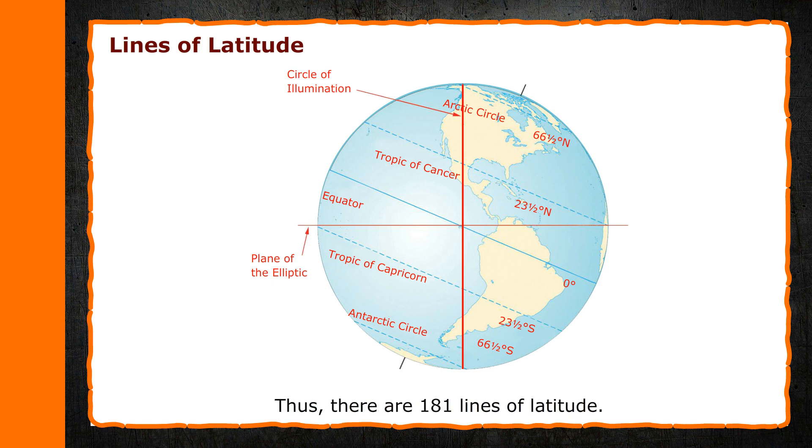Thus, there are 181 lines of latitude. In the Northern Hemisphere, the longitudes are labeled 10 degrees north, 20 degrees north, and so on. While in the Southern Hemisphere, they are labeled 10 degrees south, 20 degrees south, and so on. The equator is marked as the 0 degrees latitude. It is the longest line of latitude. It is also called the Great Circle.